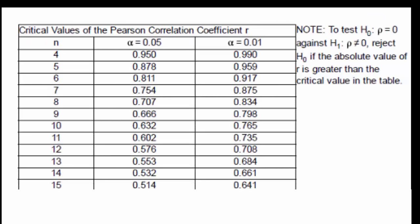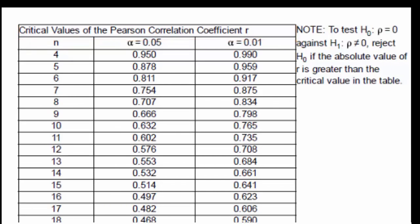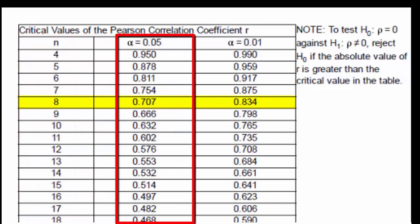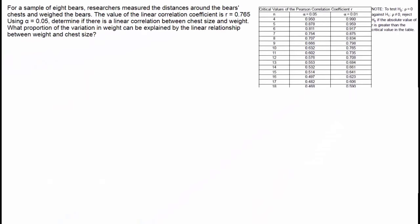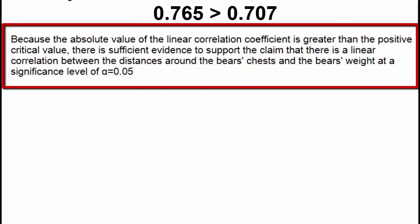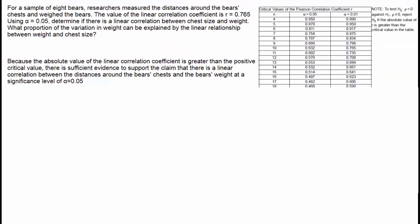Since we are not given the data set, the only way to determine if there is a linear correlation is to look at the critical values of the Pearson correlation coefficient r. Looking down the n column for a sample size of 8 and going across for an alpha equal to 5%, the critical value is 0.707. Because the absolute value of the linear correlation coefficient is greater than the critical value, there is sufficient evidence to support the claim that there is a linear correlation between the distances around the bear's chest and the bear's weight at a significance level of alpha equal to 0.05.